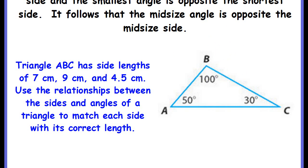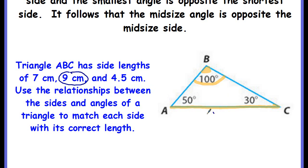The largest angle is angle B at 100 degrees. I need to know the side that is opposite this angle. The general rule is that it's the side that does not touch the angle. Side AB and side BC both touch angle B, but side AC does not. So AC is the side opposite angle B. Since angle B is the largest angle, we want the largest side length — nine centimeters — to go there.